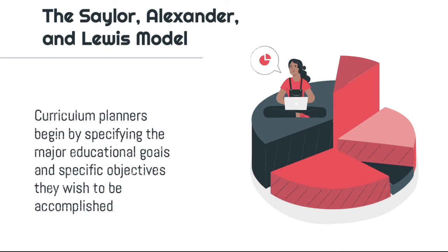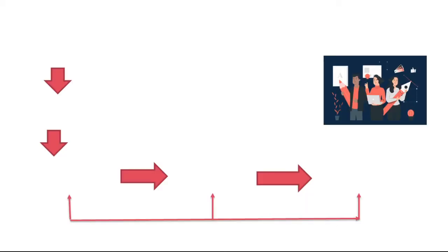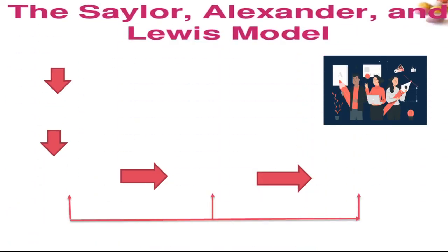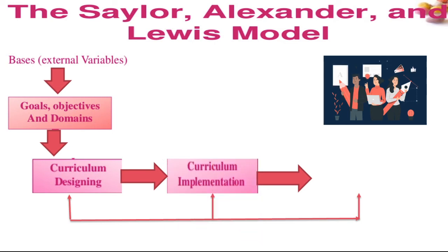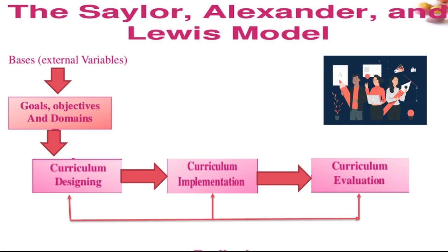The Saylor, Alexander and Lewis Model — wherein curriculum planners begin by specifying the major educational goals and specific objectives they wish to be accomplished. There will be a basis or external variables for goals, objectives, and domains, which will promulgate curriculum designing and curriculum implementation for evaluation and feedback.